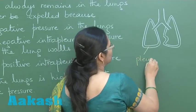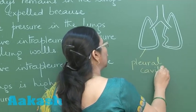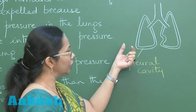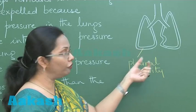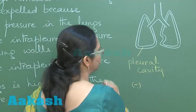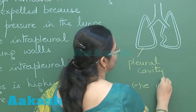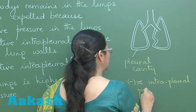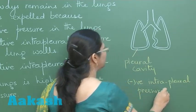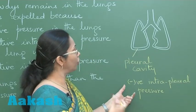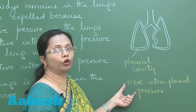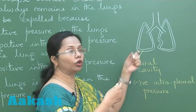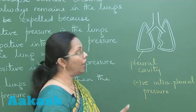The space between the pleural membranes is called the pleural cavity. The fluid filled in this pleural cavity is the pleural fluid, and the pressure here is always negative. This negative intrapleural pressure means it is lesser in comparison to the atmospheric pressure, and it is because of this negative pressure that the alveoli and lungs can expand and move outward.